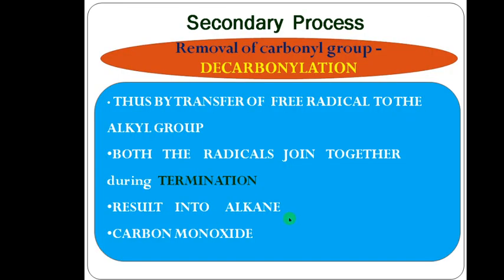The primary process is the immediate absorption of light. In the secondary process, upon absorption, Norrish pointed out that the carbonyl group is removed - called decarbonylation. The radical is transferred to the alkyl group, and both methyl radicals or alkyl radicals join together through a dimerization type of termination, resulting in an alkane as a product. Depending upon the reactant, an alkene may also be a product.